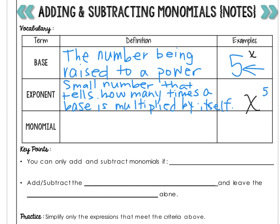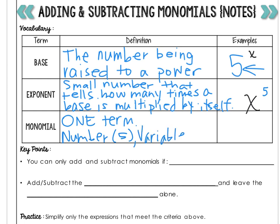A monomial is one term. A monomial can be a number like 5, it can be a variable like x, or it could be the product of a number and a variable like 6x squared.